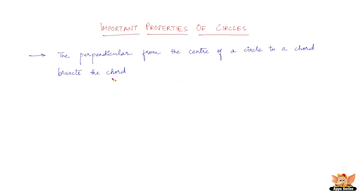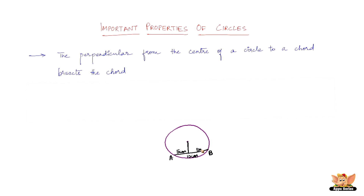More important properties of circles: the perpendicular from the center of a circle to a chord bisects the chord. Let us have a circle with its center, and draw a chord AB. The perpendicular from the center to chord AB bisects it. For example, if the chord is 10 centimeters in length, after drawing the perpendicular from the center, each half becomes 5 centimeters.